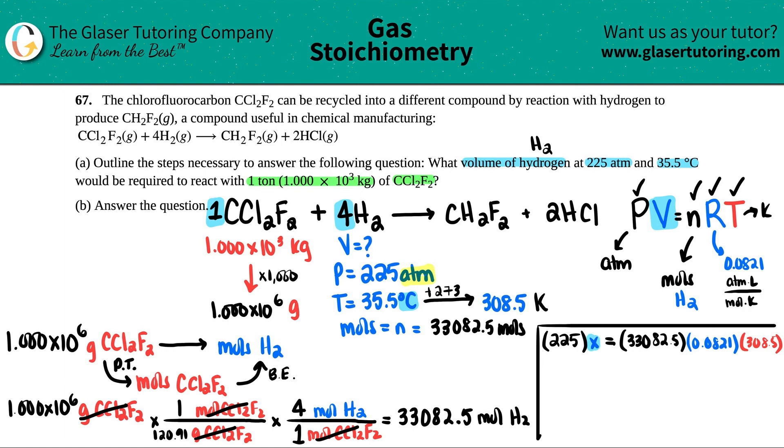We want to solve for x, so seems like I'm just going to divide by 225 on both sides. So 225, 225, this cancels out. And now I have x equals whatever that is. So 33,082.5 times 0.0821 times 308.5, all divided by 225.